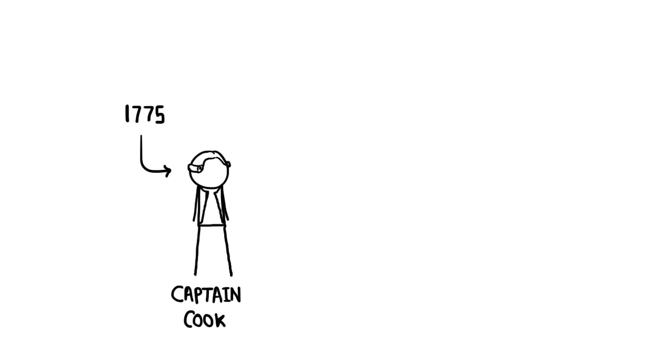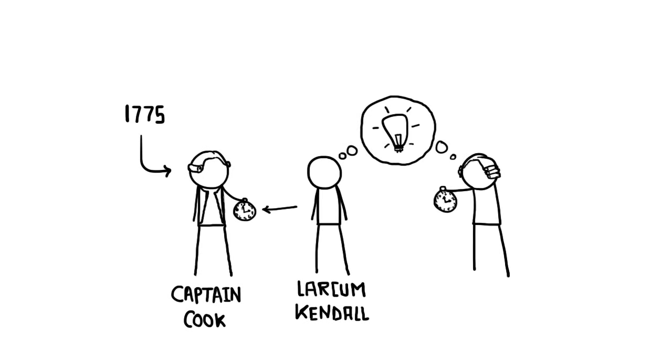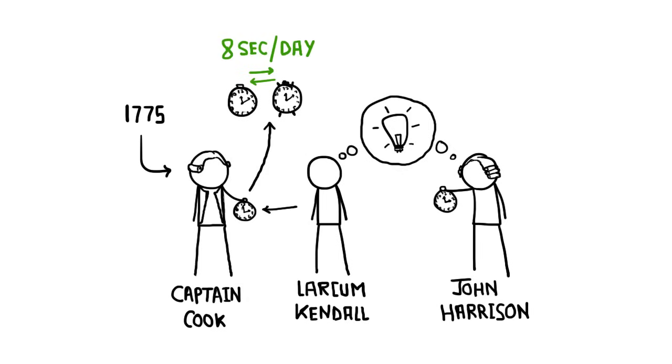In 1775, Captain Cook returned from a three-year voyage, having used one of the chronometers submitted by Larcom Kendall, which was a copy of H4 clock made by John Harrison. Upon comparing it to local reference clocks, it was found to have been accurate to within eight seconds per day.